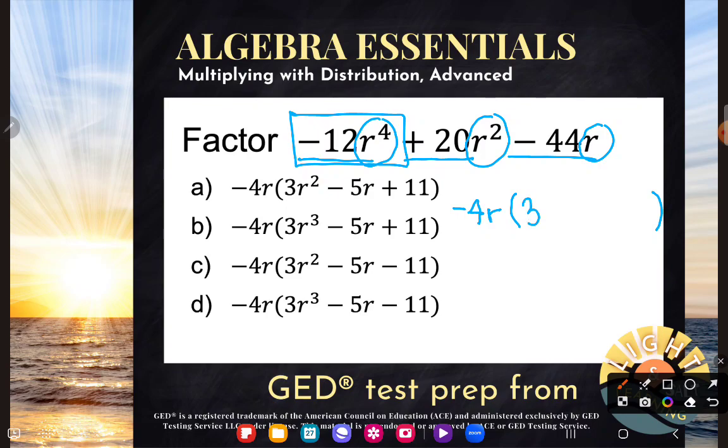Or another way to think of it, what would I have to multiply negative four by to get negative 12? It would be three. Now, I had four r's multiplying, but I'm factoring out one of the r's. And so now I'll have three r's multiplying. Awesome.